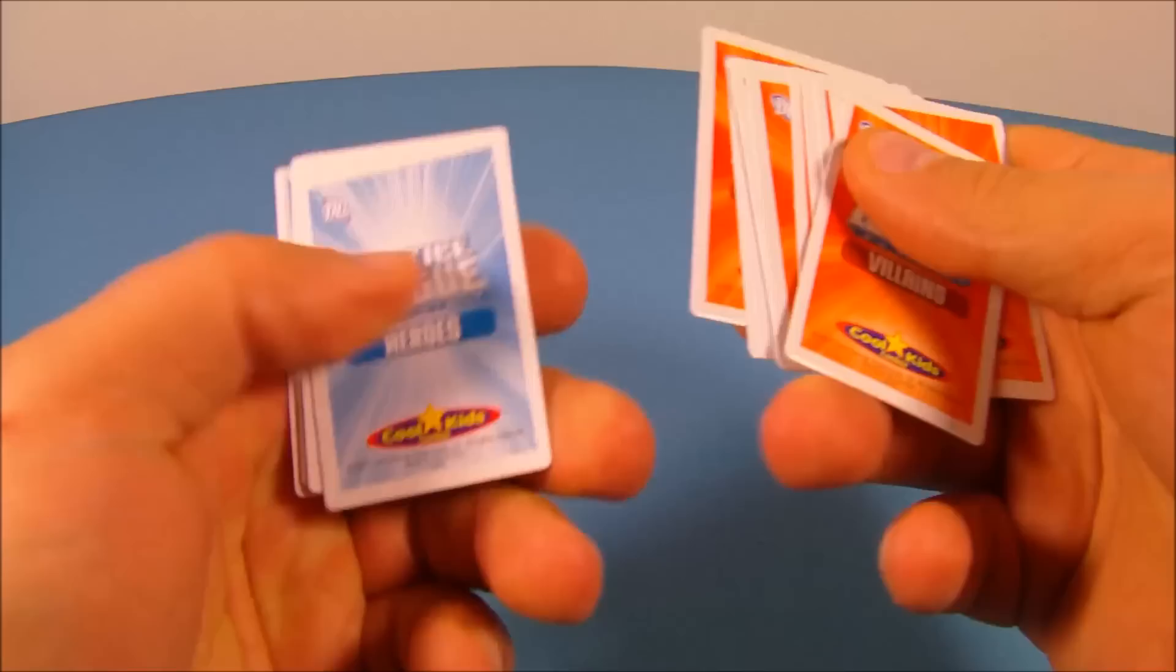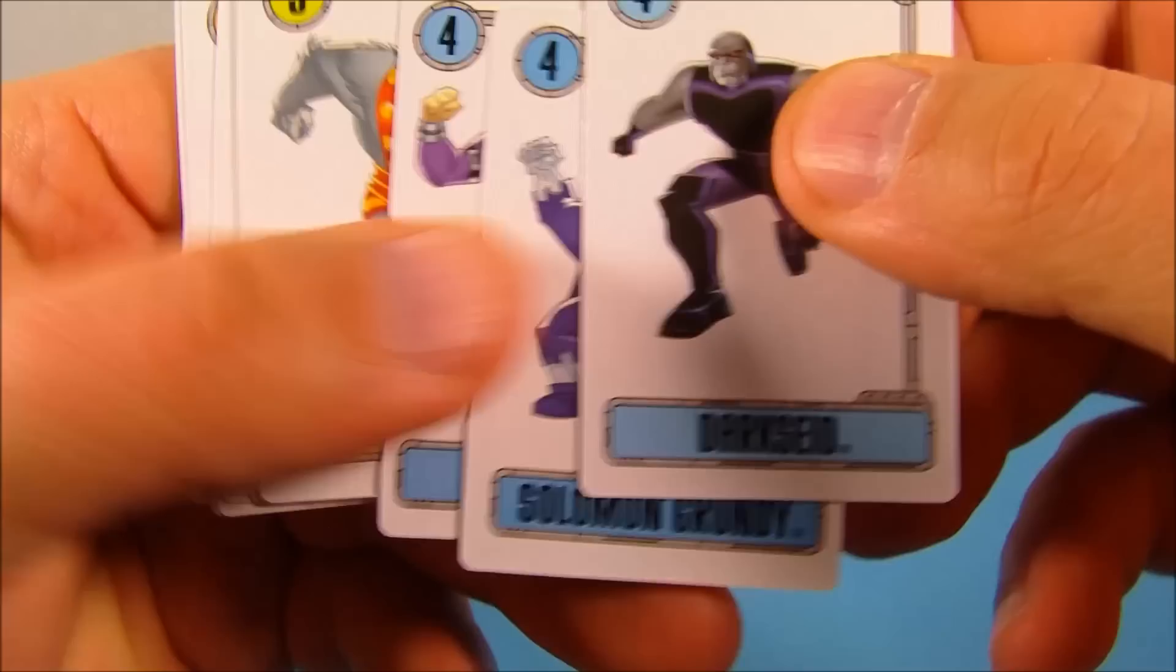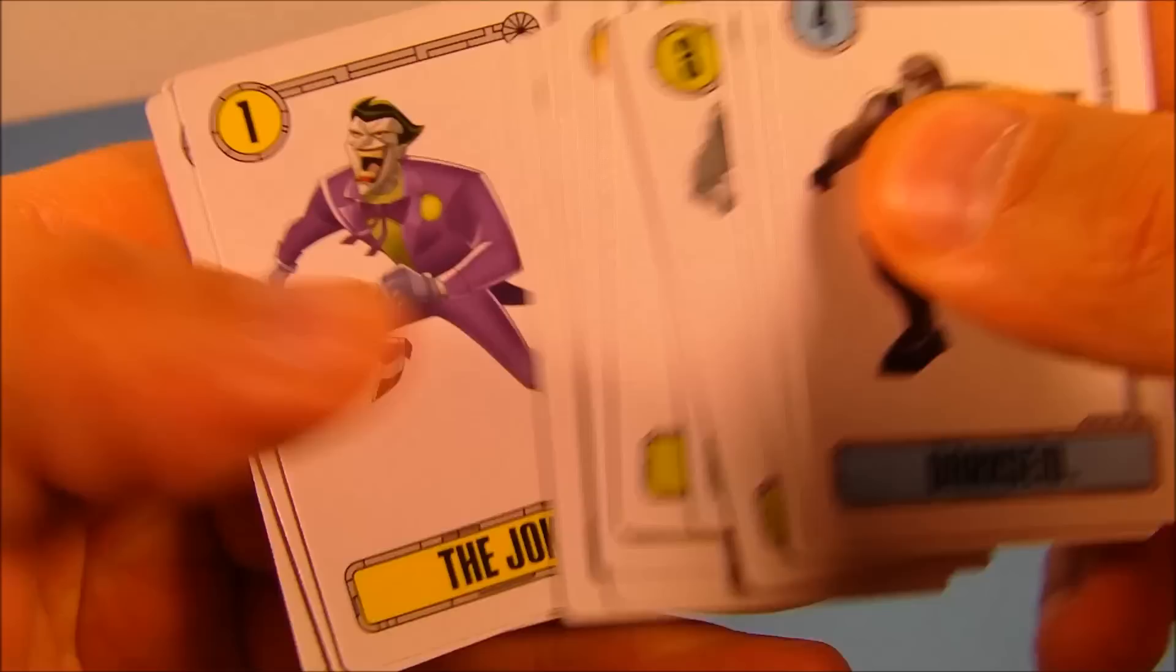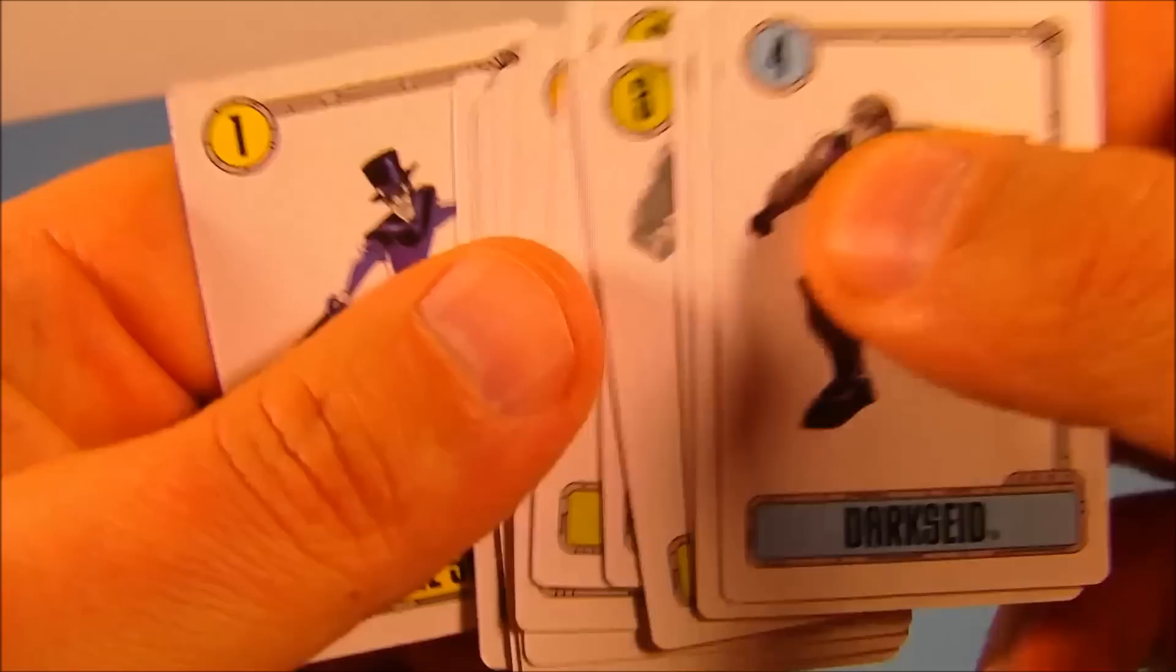Let's go through the Villains real quick. So we have Darkseid, Solomon Grundy, Mongol, Ultra Humanite, Sinestro, Brainiac, Dr. Destiny, Deadshot, Star Sapphire, The Joker, everybody's favorite villain, and then we have Copperhead and The Shade.